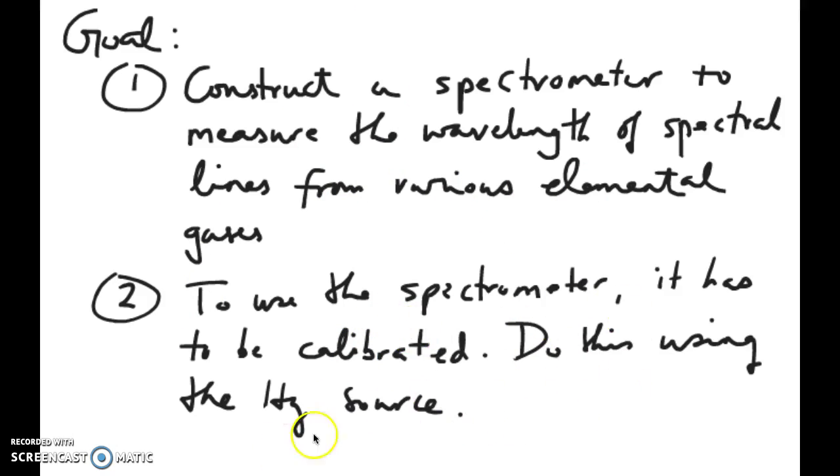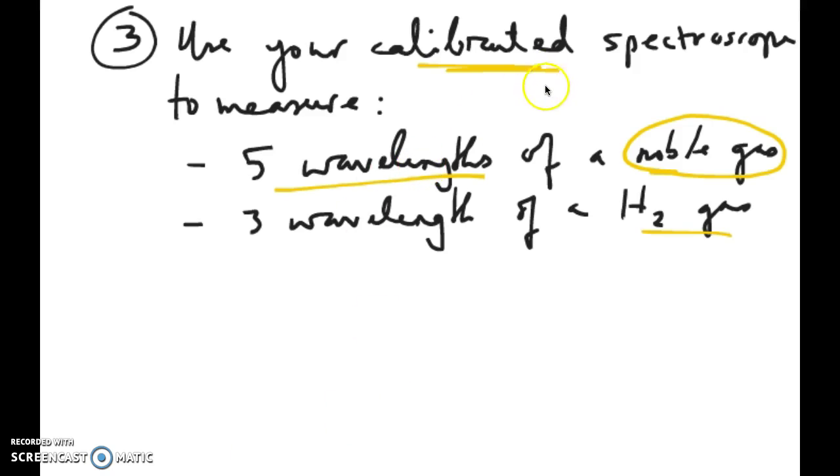Before you can actually use the spectrometer to measure these wavelengths, you first have to calibrate it. So we're going to do this with a mercury source. Once the spectrometer has been calibrated, you can then use it to actually measure wavelengths. You're going to take a noble gas and measure five wavelengths of that noble gas. And then the next part of it is you're going to take a hydrogen gas source and measure three wavelengths from that hydrogen gas.